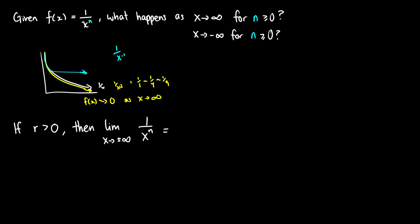Going in the negative direction, the same holds. Whether we do 1/x, 1/x², or 1/x^0.1, we're tending towards 0 whether we go to positive or negative infinity. So we can state: if n is greater than 0, then the limit as x goes to either positive or negative infinity of 1/x^n is going to be 0. As x and n get larger, we get closer and closer to 0. So 0 is a horizontal asymptote for any function of the form 1/x^n with n ≥ 0.